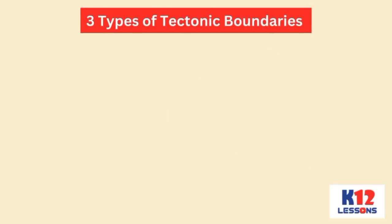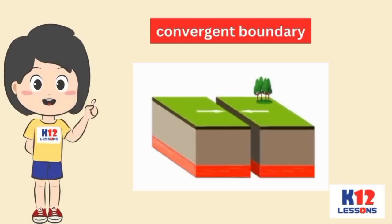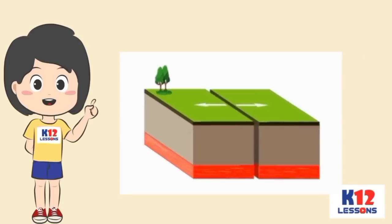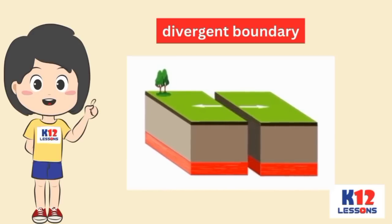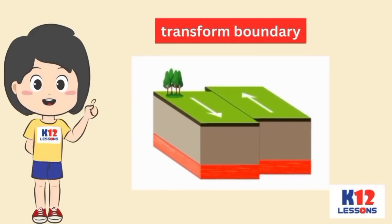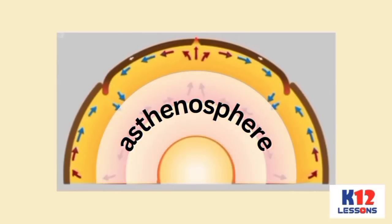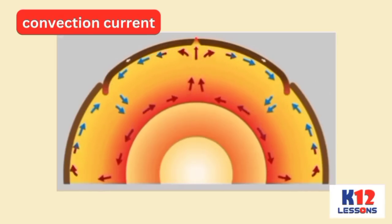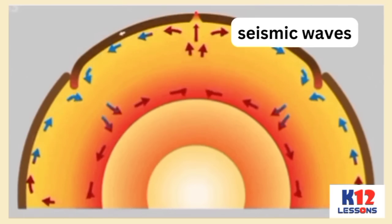The three types of tectonic boundaries are convergent, divergent, and transform plate boundary. A convergent boundary occurs when two plates move towards each other. A divergent boundary happens when two plates move away from each other. Earthquakes are common along divergent boundaries. Two plates sliding past each other form a transform plate boundary. Heat and pressure in the asthenosphere cause the movement of molten rocks, referred to as convection currents.